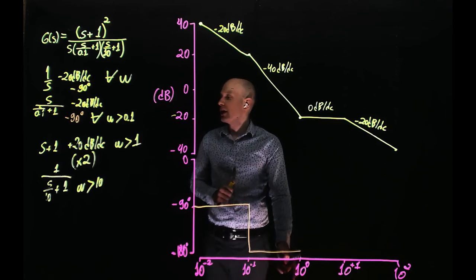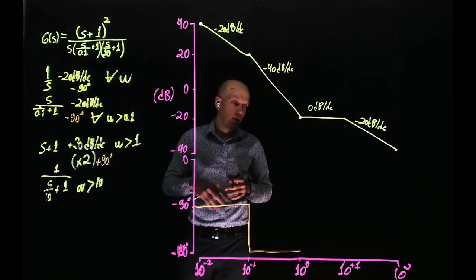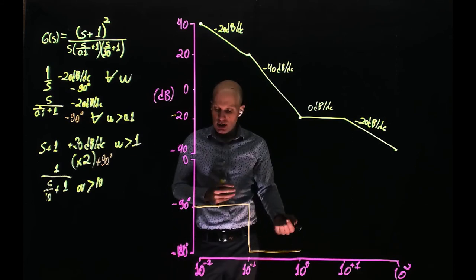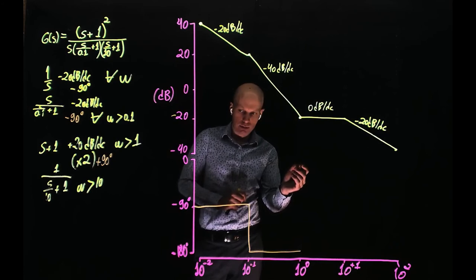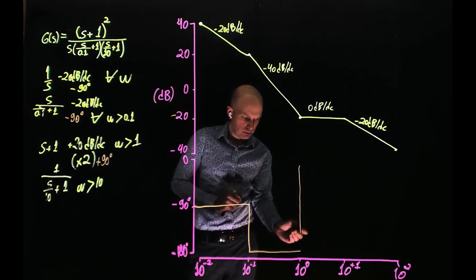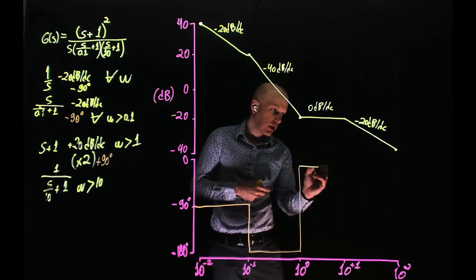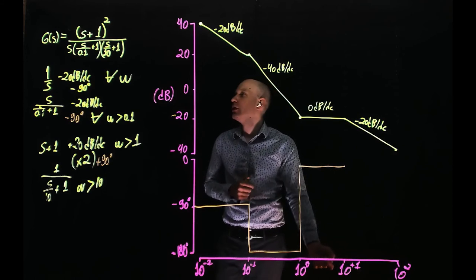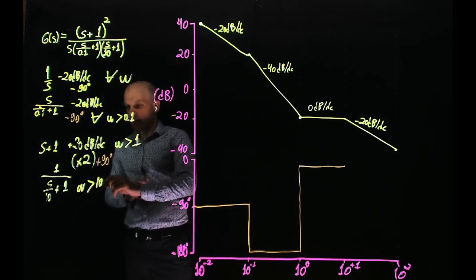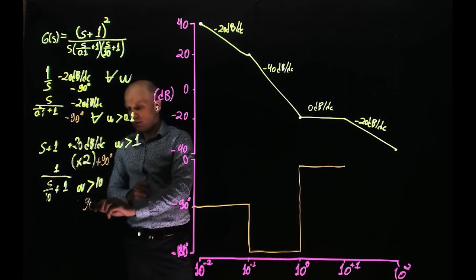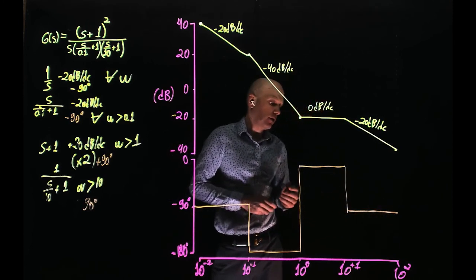When you reach 1 radian per second, we have two real zeros. Each real zero adds plus 90 degrees to the phase, and because we have two of them at the same location at 1 radian per second, they add 180 degrees total. So minus 180 plus 180 — the Bode plot phase now goes to zero. The phase stays at zero up to the next cutoff frequency at 10 to the power of 1, which is a real pole. This real pole adds negative 90 degrees, so the phase that is zero goes back to negative 90 degrees and stays at negative 90 as the frequency tends to infinity.